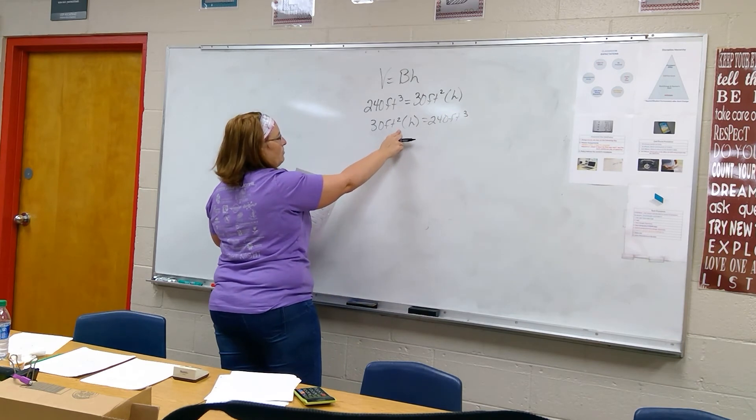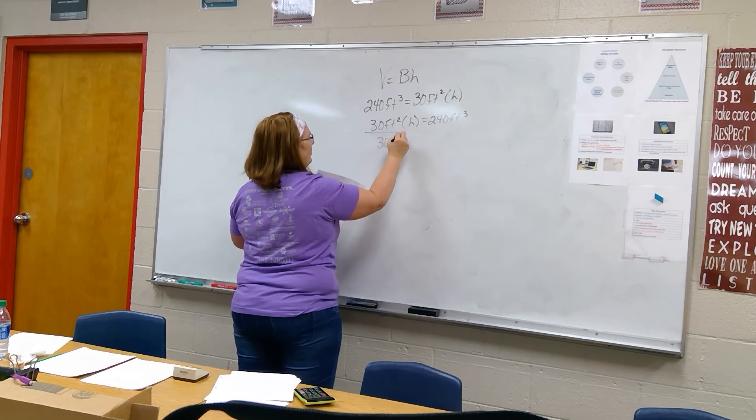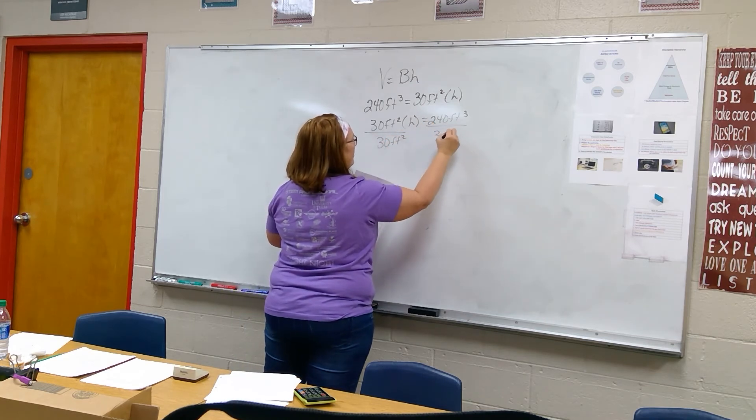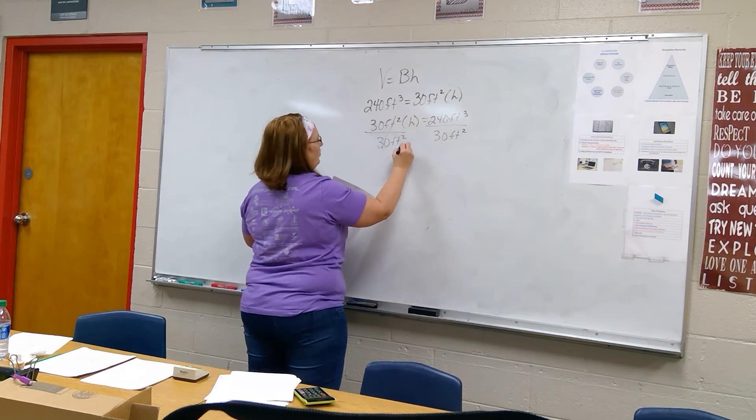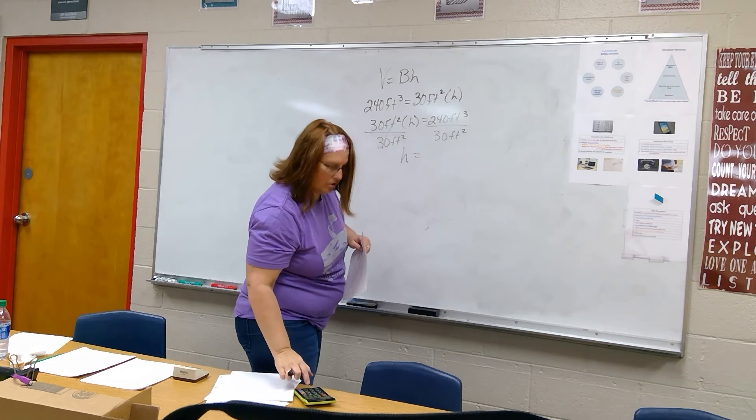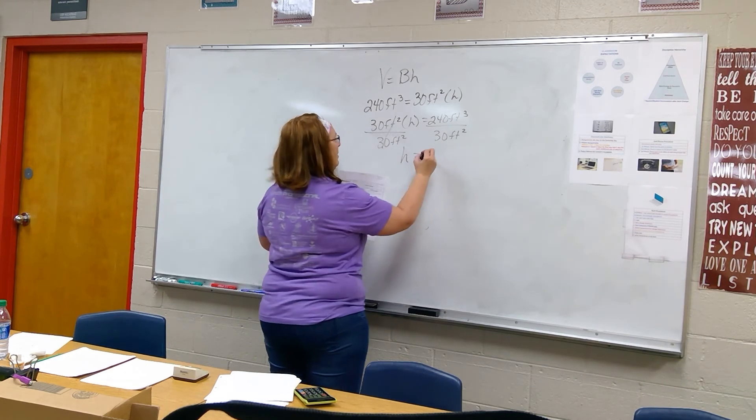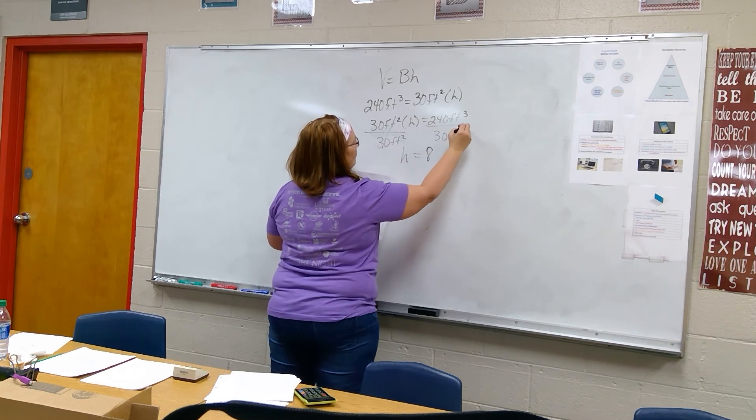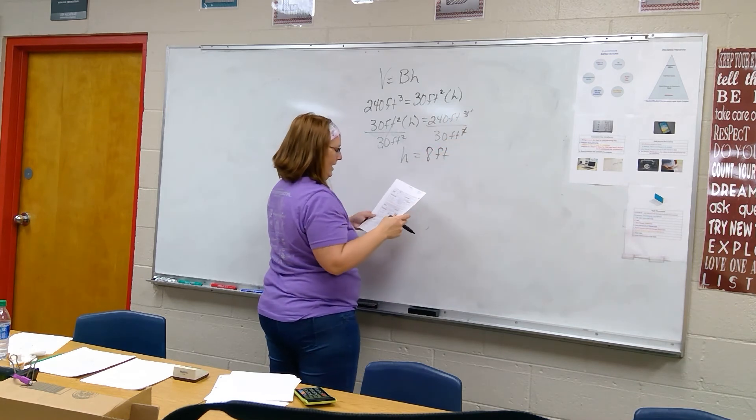This is a multiplication problem so you need to do the inverse operation, divide each side by 30 feet squared. 30 feet squared divided by 30 feet squared is just one, that leaves you with h. 240 divided by 30 is 8. We've already used two of those feet, so that just leaves us with one, so it's eight feet.